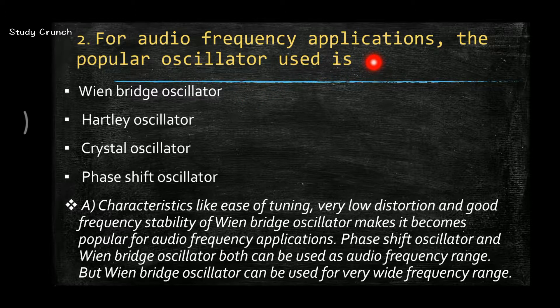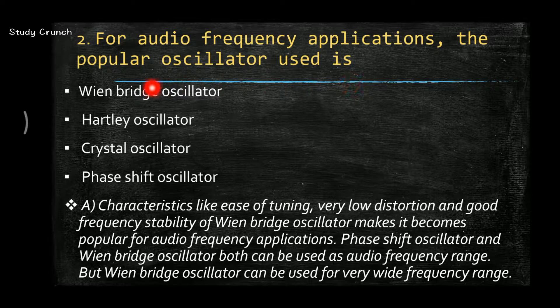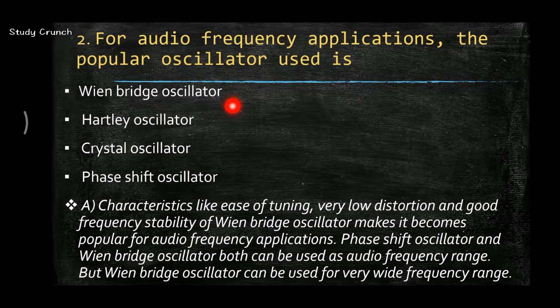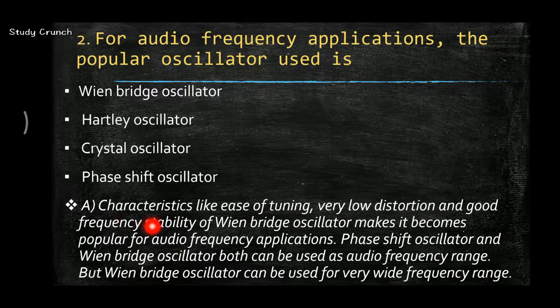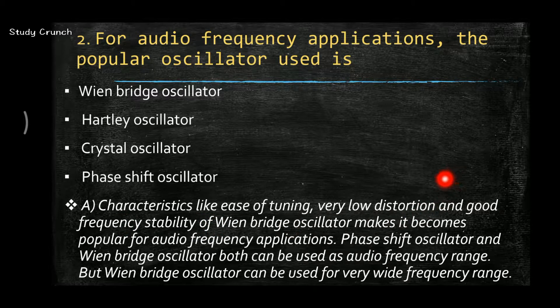Moving on to the next question: for the audio frequency applications, the popular oscillator used is answer A, that is Wien bridge oscillator. Because it has ease of tuning, very low distortion, and good frequency stability, so it is very popular for audio frequency applications.